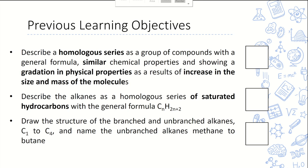We have completed alkane. Let's recap what we learned in the previous lesson before we move on. Alkane belongs to one of the homologous series. Members in the same homologous series share the same general formula and similar chemical properties. As we go down the group, they become bigger, and that is why physical properties such as boiling point and melting point will increase.